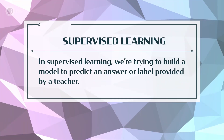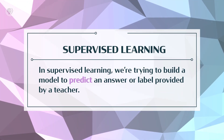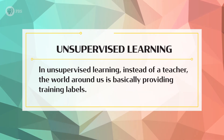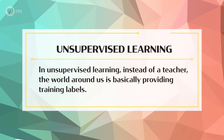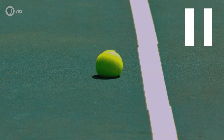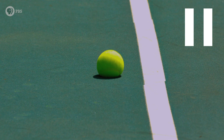The key difference between supervised and unsupervised learning is what we're trying to predict. In supervised learning, we're trying to build a model to predict an answer or label provided by a teacher. In unsupervised learning, instead of a teacher, the world around us is basically providing training labels. For example, if I freeze this video of a tennis ball right now, can you draw what could be the next frame? Unsupervised learning is about modeling the world by guessing like this, and it's useful because we don't need labels provided by a teacher. Babies do a lot of unsupervised learning by watching and imitating people, and we'd like computers to be able to learn like this as well. This lets us utilize lots of freely available data in the world or on the internet.